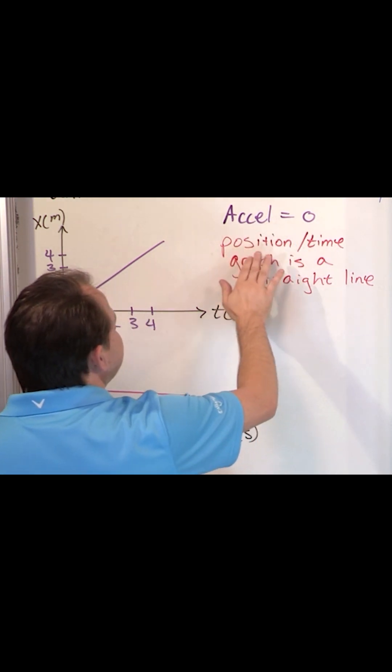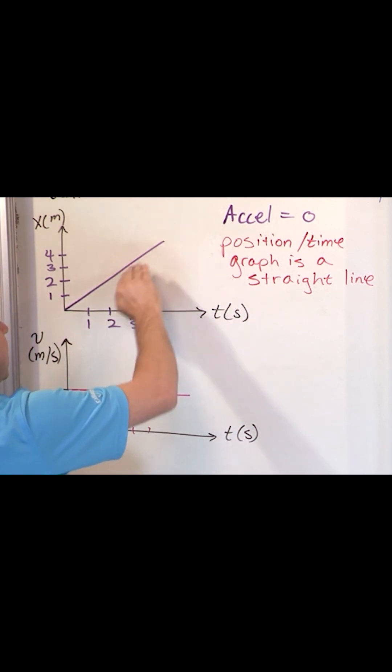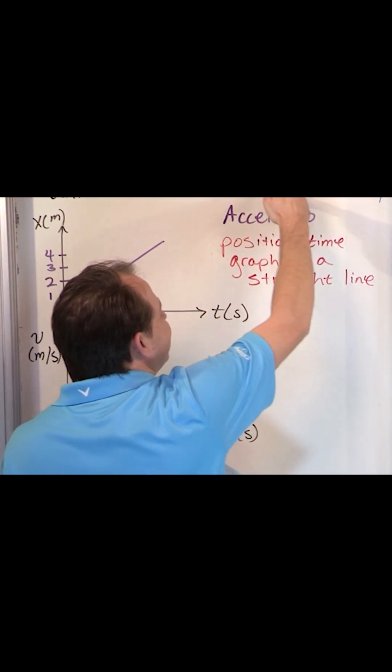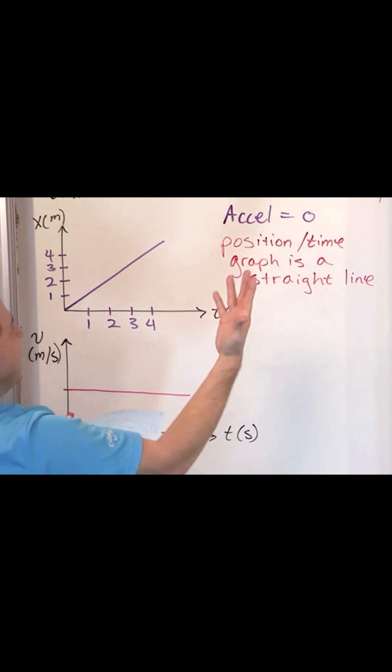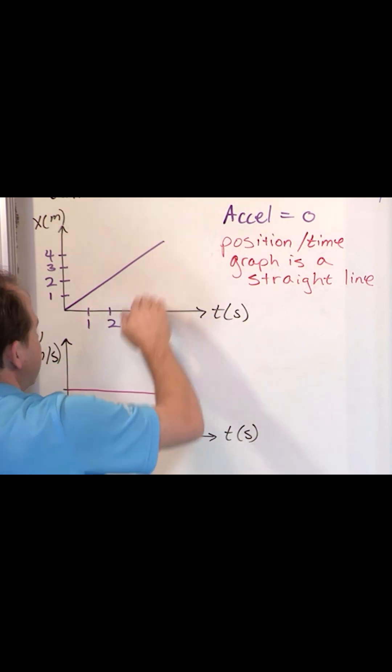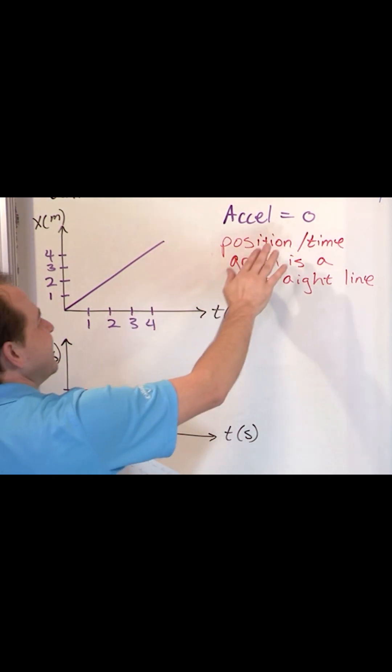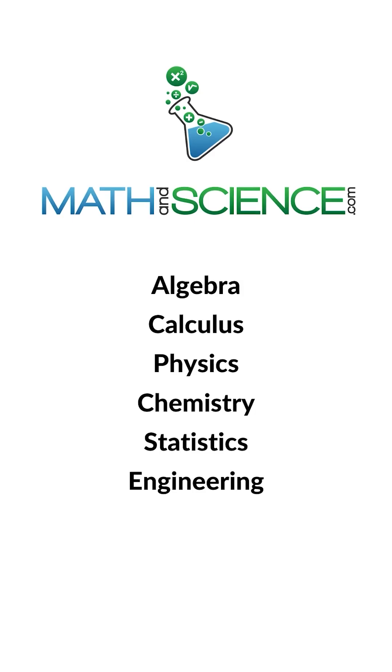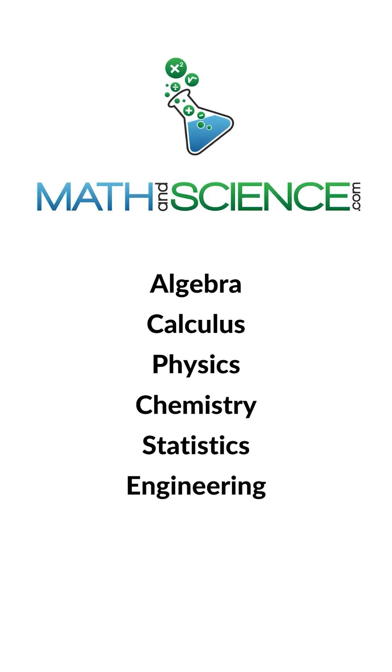So we say, notice, the acceleration is zero, the position time graph is a straight line, the velocity is constant. These are just different ways of saying exactly the same thing: uniform motion. This is a straight line because the velocity is constant during uniform motion.